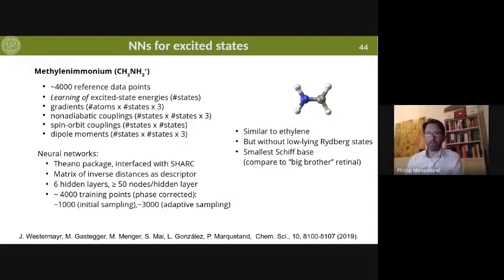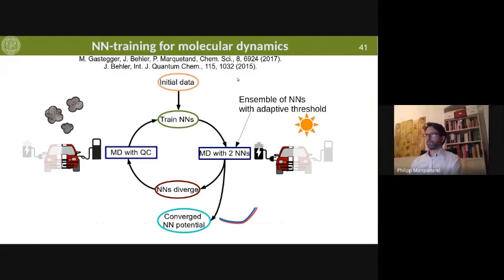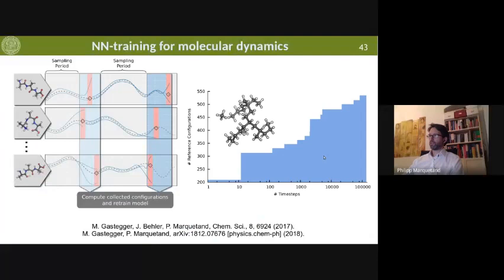A question from Max: when you retrain the neural network model, do you keep all or part of the old samples, or just replace everything with new data? We always add new points — we still need all the old data, we cannot throw anything away. Otherwise the whole learning does not work. We make our training data always larger; this is the number of data points we have in our training set at the end.